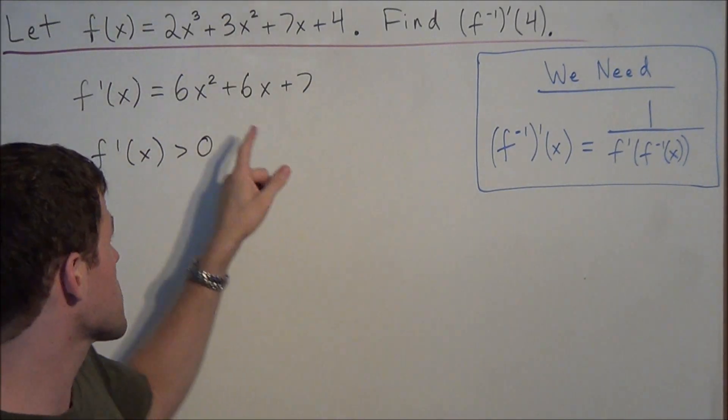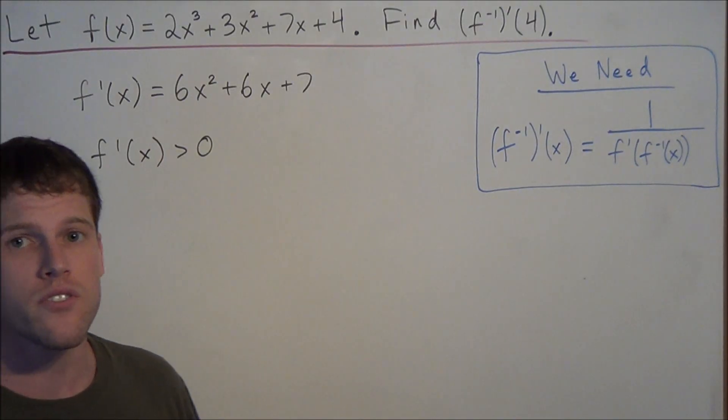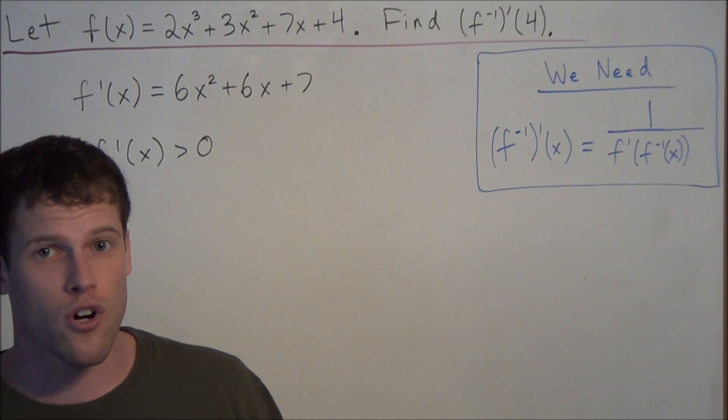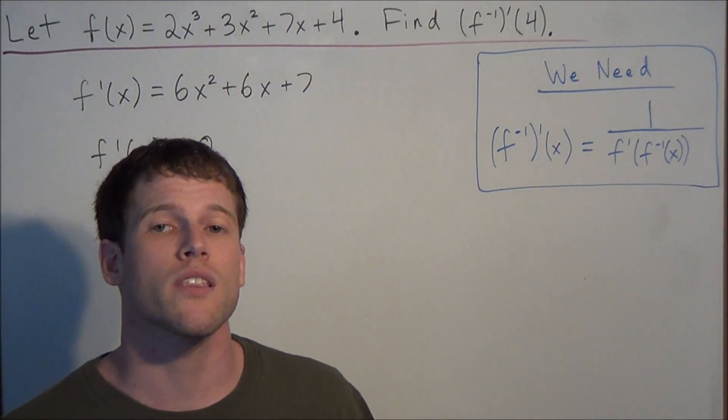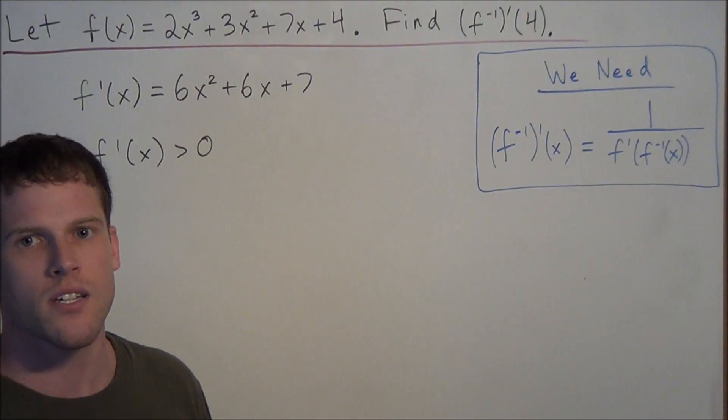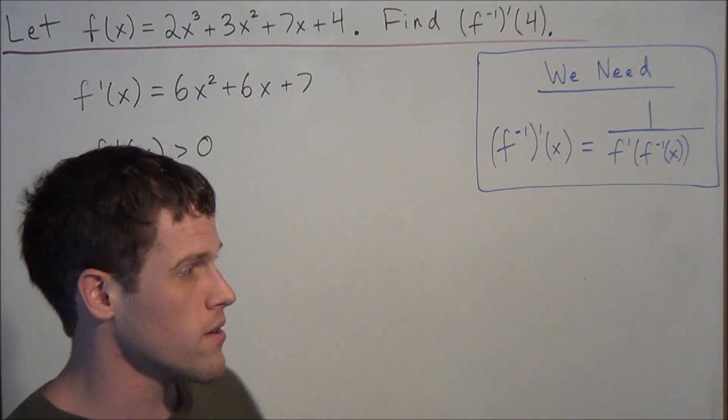Because if you note, I'm not going to graph it, but 6x² + 6x + 7 is always greater than 0. It's always above the x axis, and if the derivative is always greater than 0, that tells you that the function is always increasing. So if the function is always increasing, that means it will pass the horizontal line test. Therefore, it is 1 to 1.